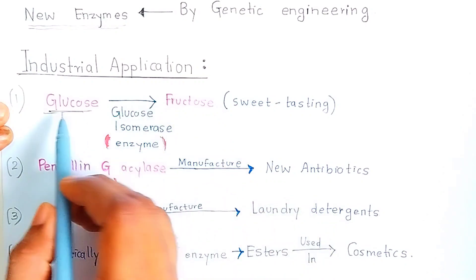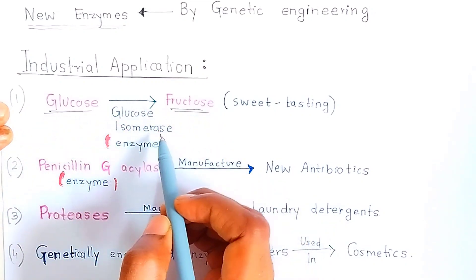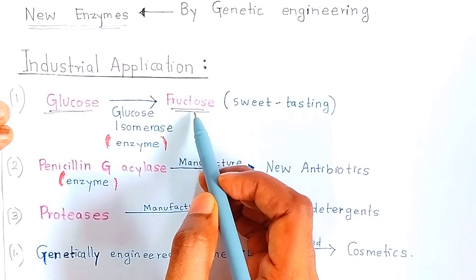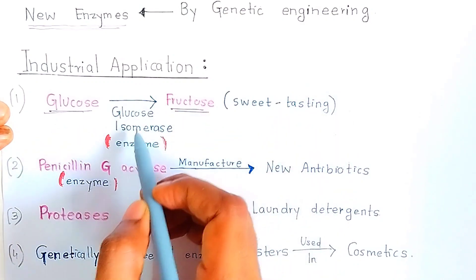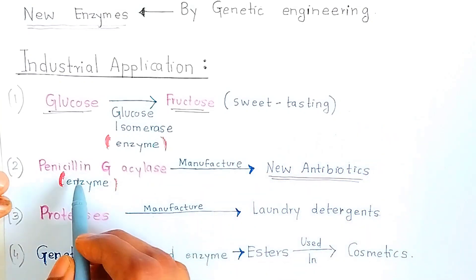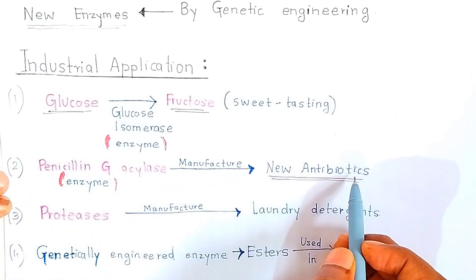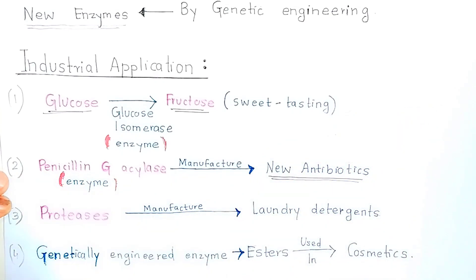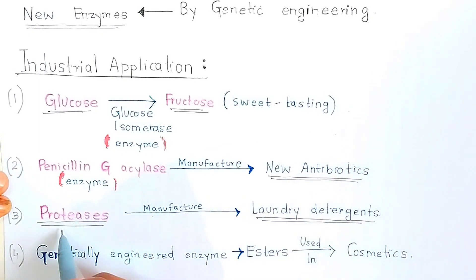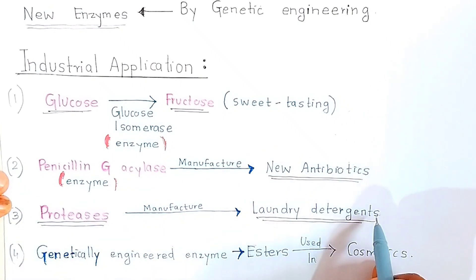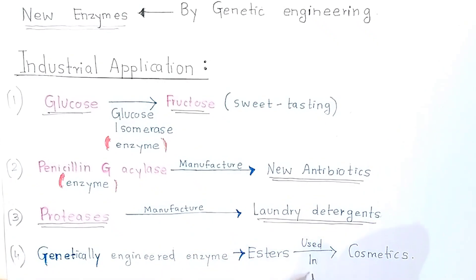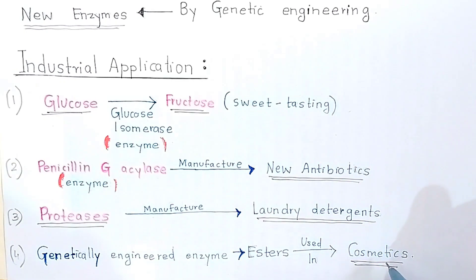In the first application, glucose is converted into fructose using glucose isomerase as an enzyme. Fructose is sweeter than glucose and gives a sweet taste. Second, new antibiotics can be prepared using enzymes — if you have this enzyme, you can prepare new antibiotics. Third, protease as an enzyme can be used to prepare laundry detergents. Fourth, genetically engineered esterase enzyme is used in cosmetic preparation. These are important industrial products you can prepare from enzymes.